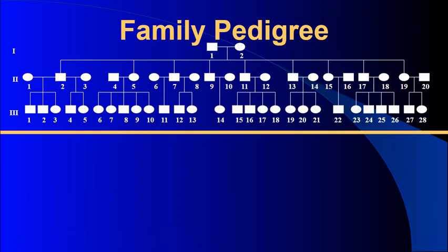If you wanted to locate a specific individual, you would identify them with their generation and their individual number. For example, if you were to locate individual 3-28, that means you are looking in the third generation for person 28, and that would actually be the last person in the third generation.